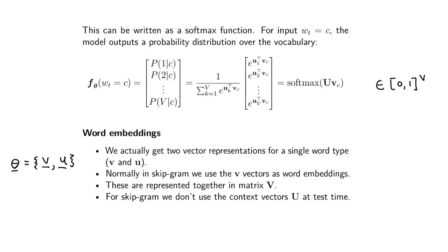With this structure we end up with two sets of word embeddings: all the V's for center words and all the U's for context words. I can stack all the U's into one big matrix U, and similarly stack all the center word embeddings into one big matrix V. The combination of these V and U matrices makes up the theta — the parameters of the model — which we'll have to learn by optimizing the loss function.